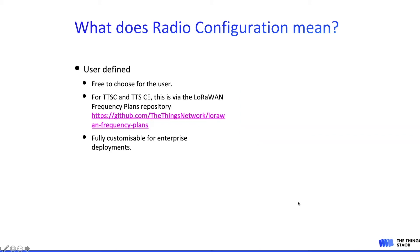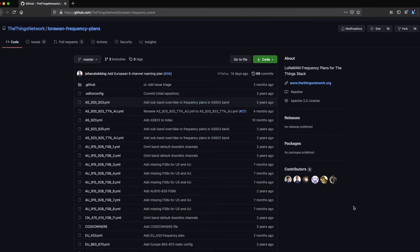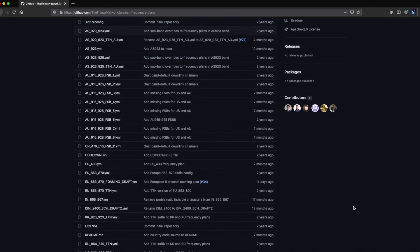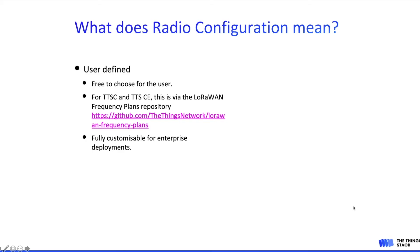Finally, you have the user-defined frequency configurations. These are values that are free for users to choose, for example non-mandatory channels in the European bands or frequency sub-bands in AU and US bands. For The Things Stack cloud and The Things Stack Community Edition, this is via the LoRaWAN frequency plans repository. If you have a custom frequency plan used by many community members, you must first create a pull request to this repository, have it reviewed and accepted, and once available it will show up in your configuration options on the server side. For enterprise deployments this is fully customizable — you can fork or create a copy of the frequency plans repository and have every field completely customized.